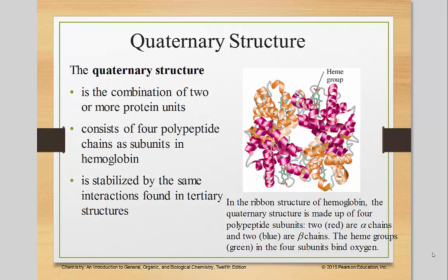Let's move on to quaternary structure. We've done primary — the sequence; secondary — the hydrogen bonding for the alpha helix, the beta sheet, and the triple helix; and tertiary — how they fold with those five components: hydrophilic, hydrophobic, disulfide, salt bridges, and hydrogen bonding. Quaternary structure is the combination of two or more protein units. It consists of four polypeptide chains as subunits, as in hemoglobin, and it's stabilized by the same five interactions found in the tertiary structure.